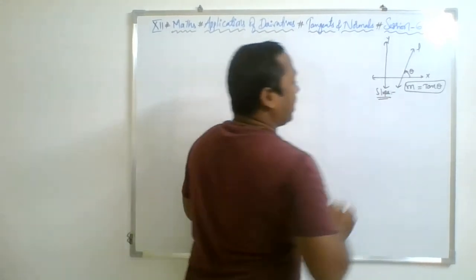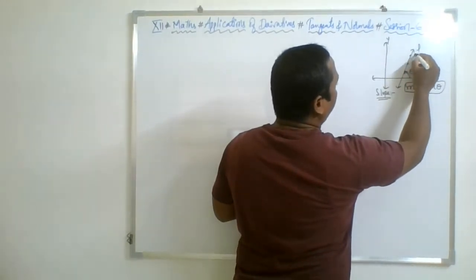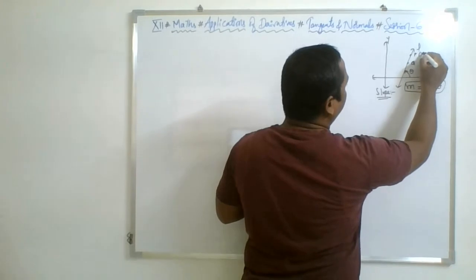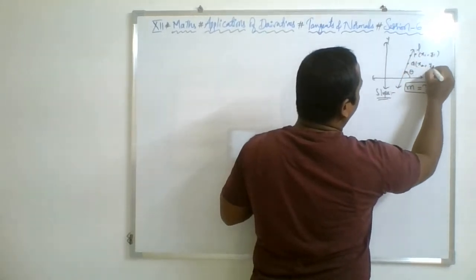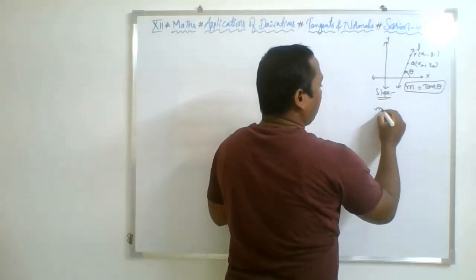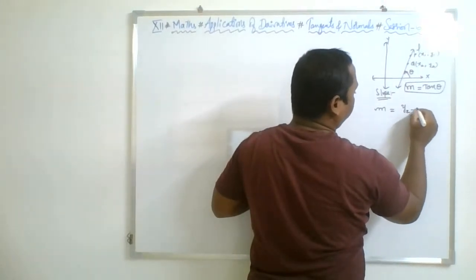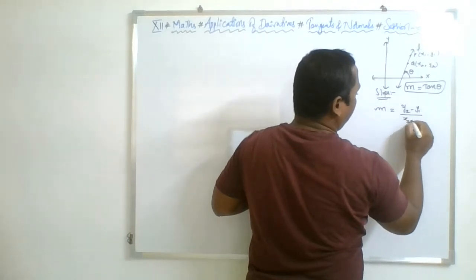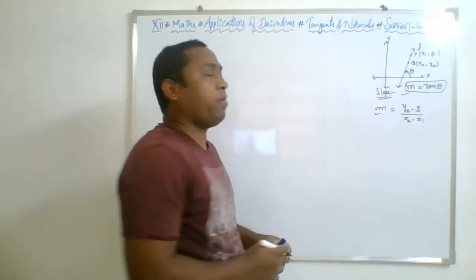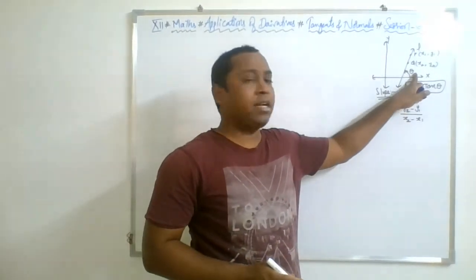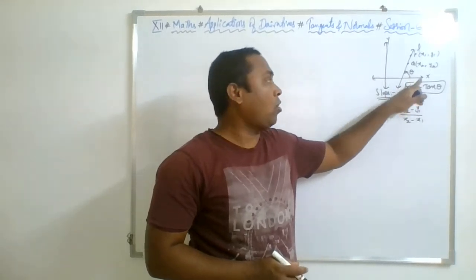Slope can also be determined when you know the two points on it. Let us say there are two points whose coordinates are x1 comma y1 and x2 comma y2. Then the slope of this line is also given by the difference of y-coordinates, that is y2 minus y1 by x2 minus x1. So there are basically two ways to find the slope of a given line.